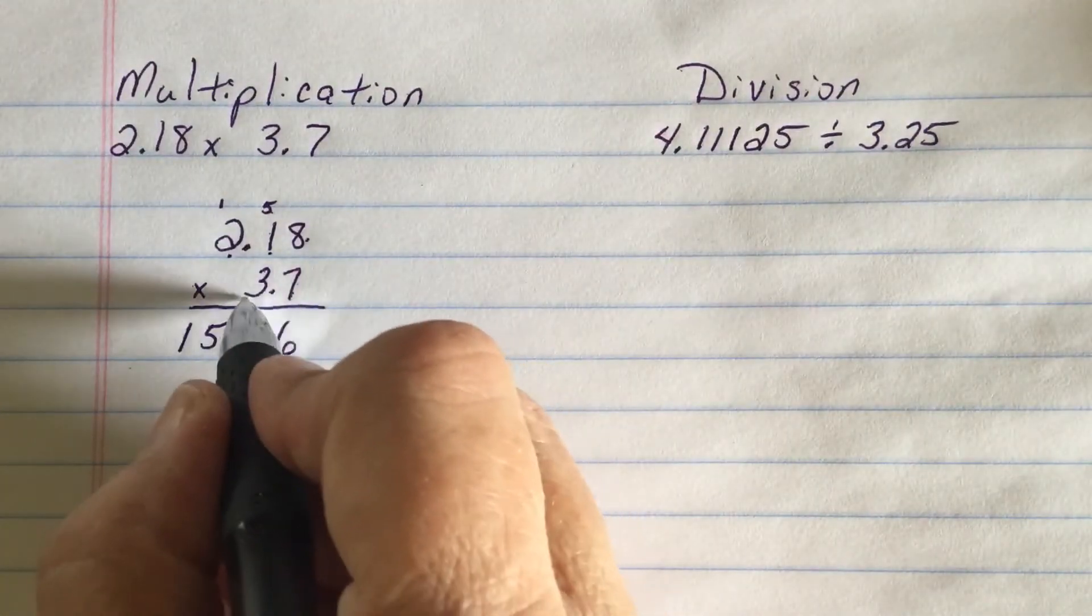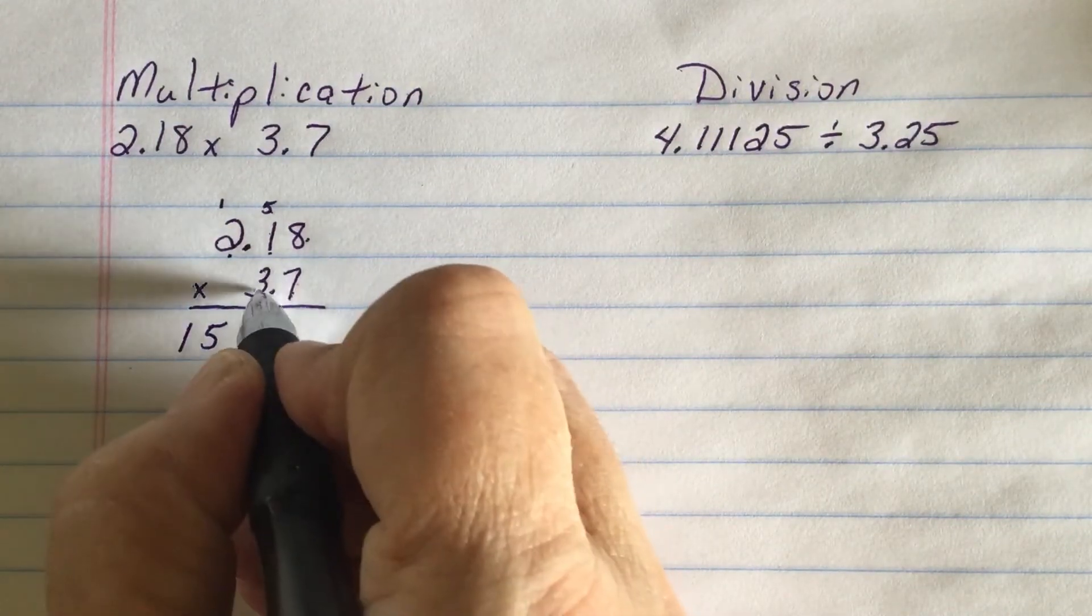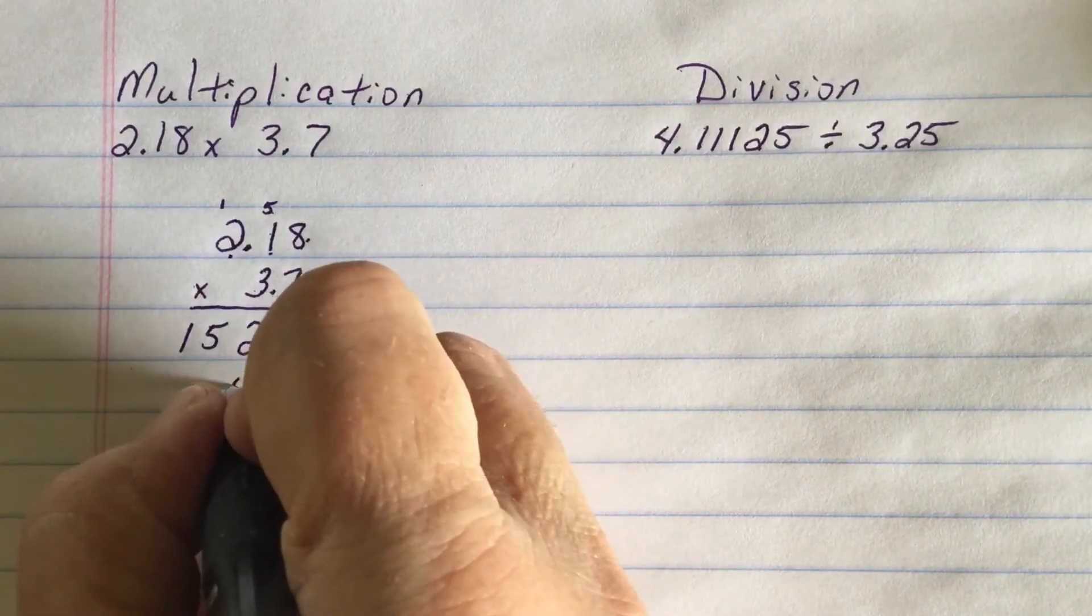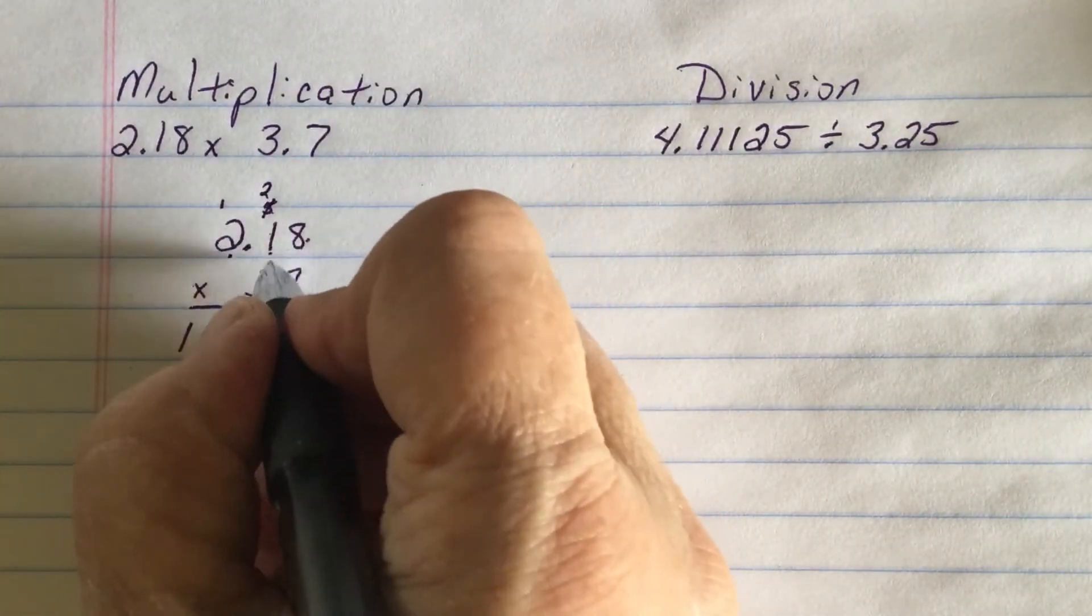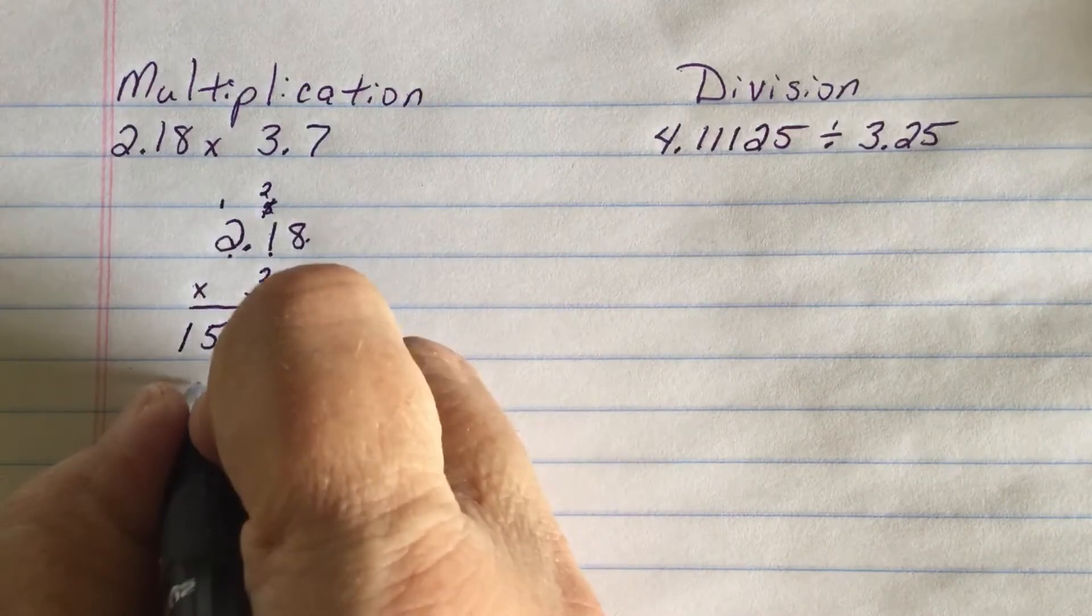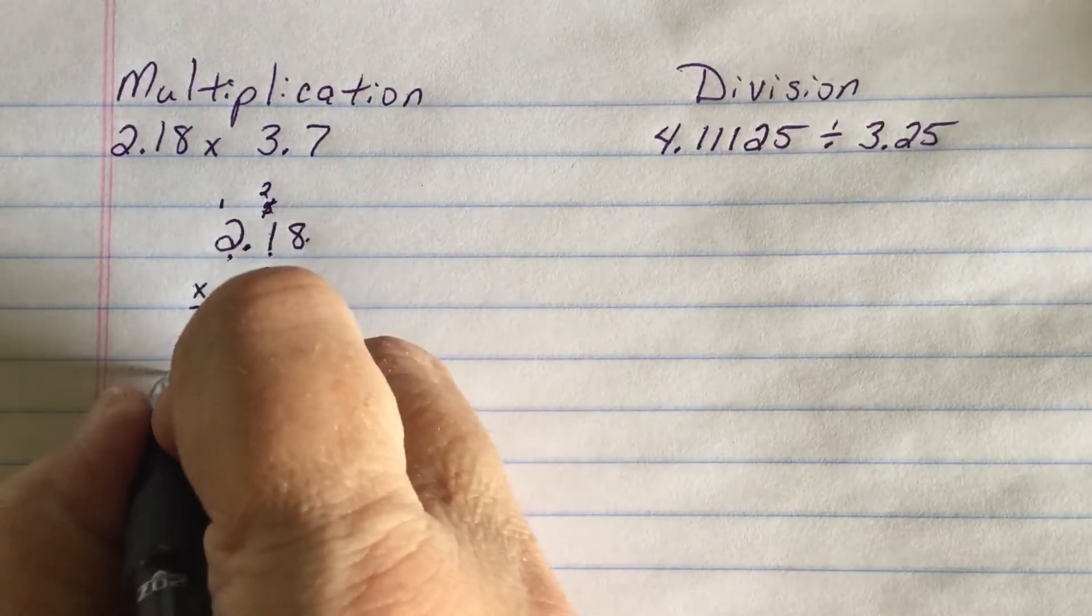Now I'm stepping over from seven to three so I'm going to start writing under the three. So three times eight is 24, carry the four, carry the two. Three times one is three plus two is five. Nothing to carry. Three times two is six.